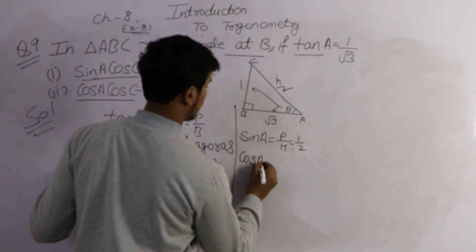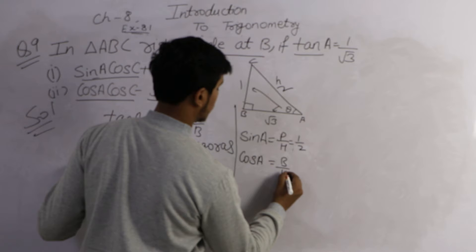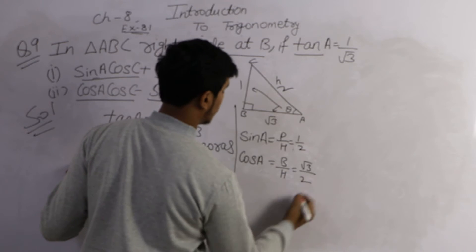Cos A, base upon hypotenuse. Base is root 3, hypotenuse is 2.